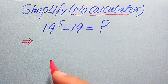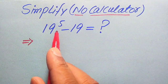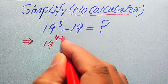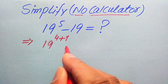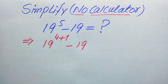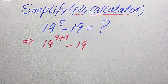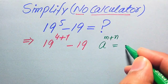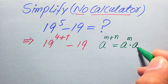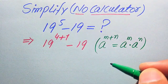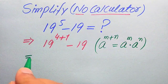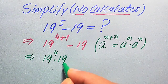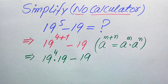The very first thing we are going to do is focus on the exponent of this term. The exponent is 5, and we write it as 19 to the power of 4 plus 1 — since 4 plus 1 equals 5 — minus 19. We then use the exponential law: a to the power of m plus n equals a to the power of m multiplied by a to the power of n. Using this rule, we break the exponent as 19 to the power of 4 multiplied by 19, minus 19.